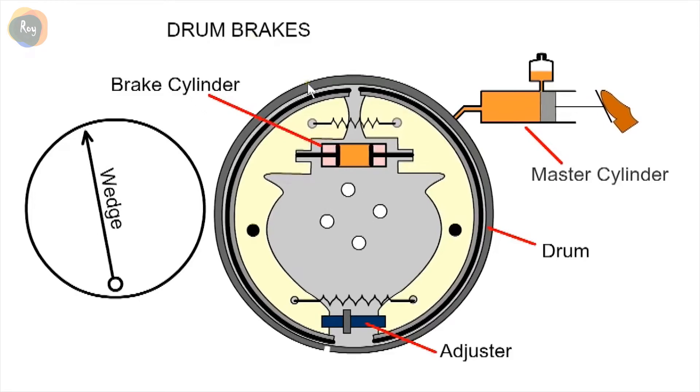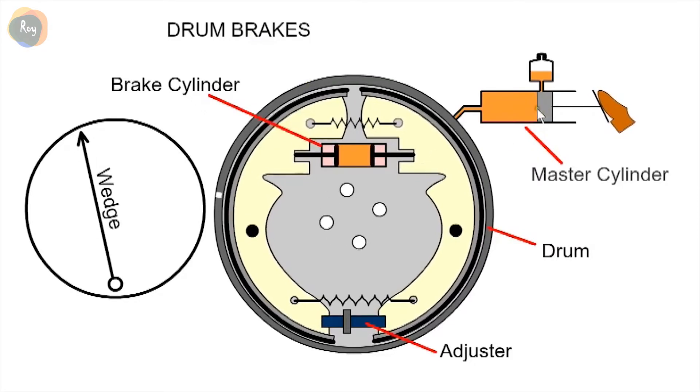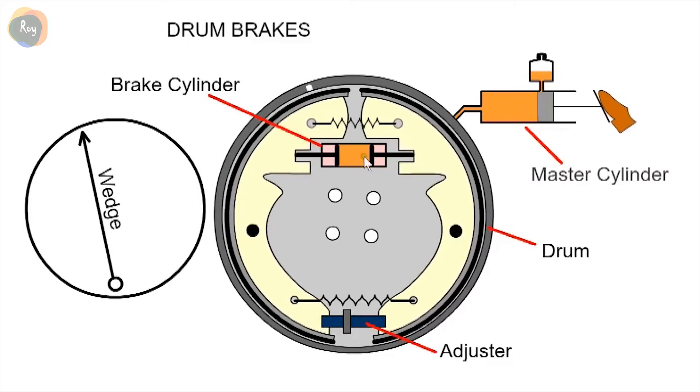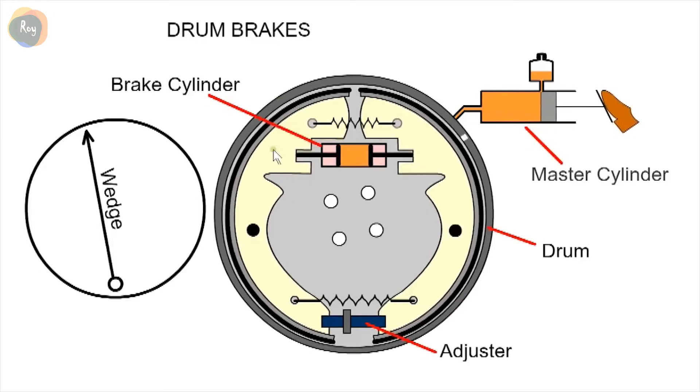Drum brakes consist of an outer drum which the wheel is attached to and the inner brake shoes. When the pedal is pressed, the high pressure fluid forces out the two pistons in the brake cylinder, pressing the shoes against the drum.